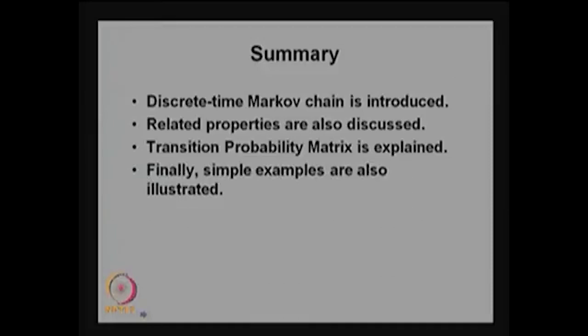In this lecture we discussed discrete time Markov chains, gave a few important properties, explained the one-step transition probability matrix, and presented two simple examples. With this, lecture one for module 4 is complete. Thanks.